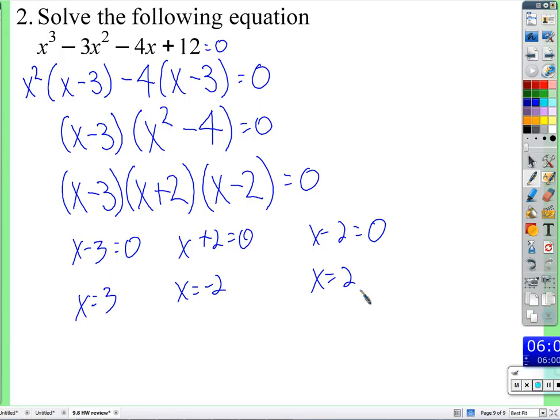Factored by grouping to start with. First group had an x squared in common. Next group had a negative four in common. Turns out when we write what's left over here for factoring out the x minus two factor, we get x squared minus four, which is a difference of squares. x plus two times x minus two. Set each factor equal to zero and solve. If you've got no questions, pass it back. Make sure you score it out of eight first.